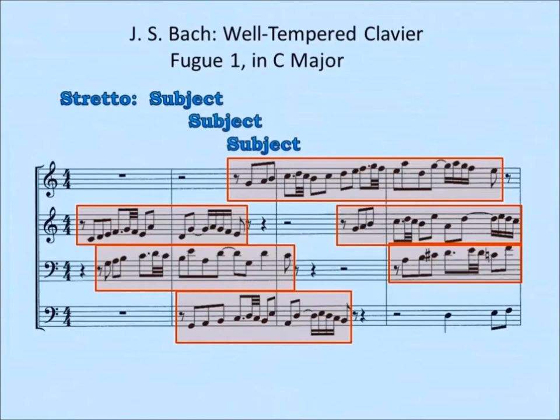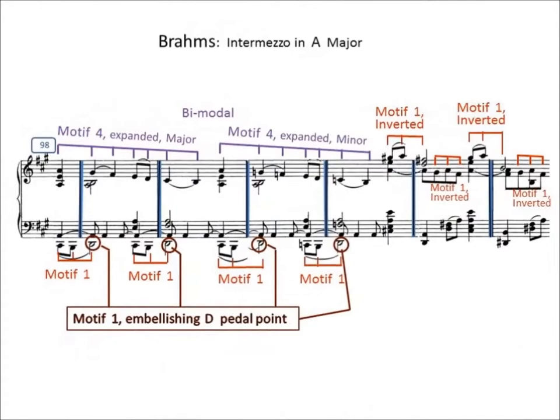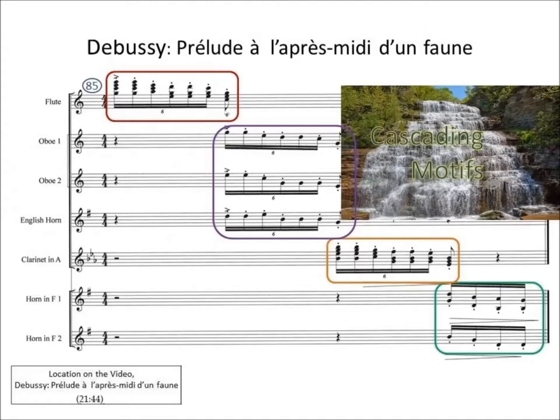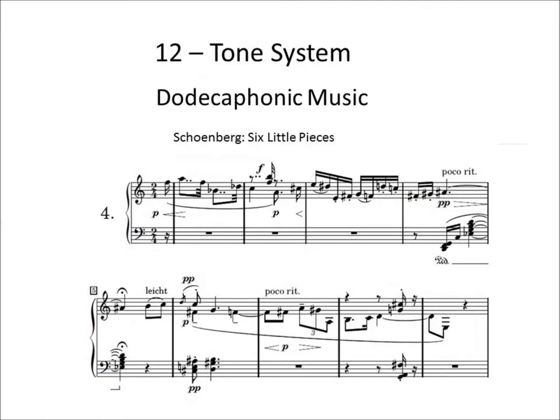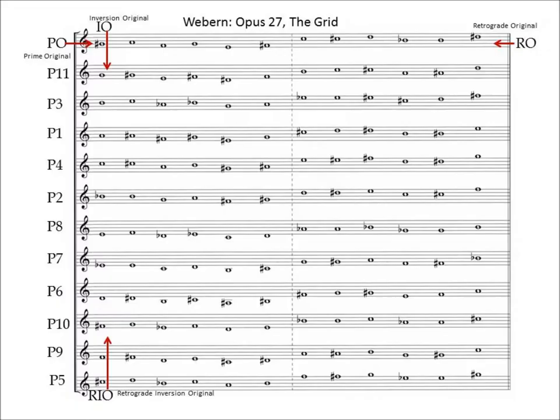Mozart's Symphony 40, Brahms' Intermezzo in A Major, three of Chopin's Preludes, Debussy's Prelude to the Afternoon of a Faun, the first movement of Bartok's Concerto for Orchestra, ballet music by Stravinsky, and some twelve-tone music by Schoenberg, Webern, and Berg.